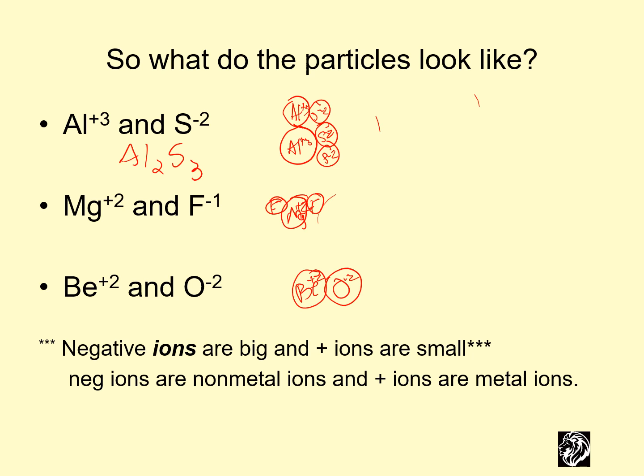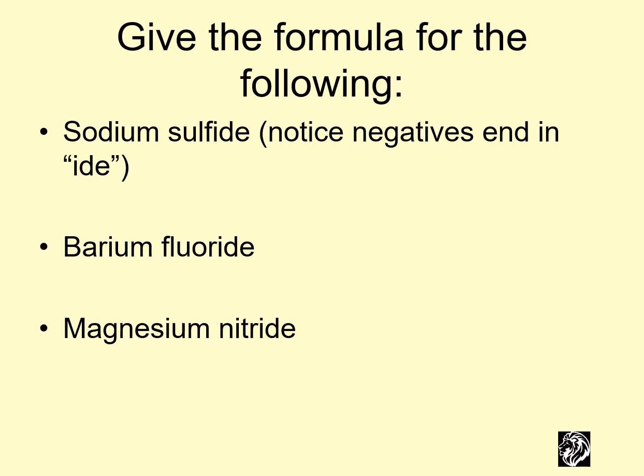Negative ions are big and positive ions are small. Negative ions are nonmetal ions because they gobbled up electrons to be negative. Positive ions are metal ions because they're losers, so they turn positive.